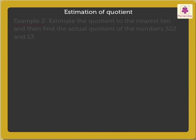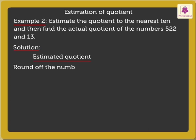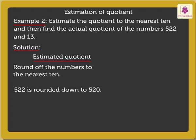Now, let us quickly solve one more example. Here, to estimate the quotient, round off the numbers to the nearest 10. So, 522 is rounded down to 520 and 13 is rounded down to 10.